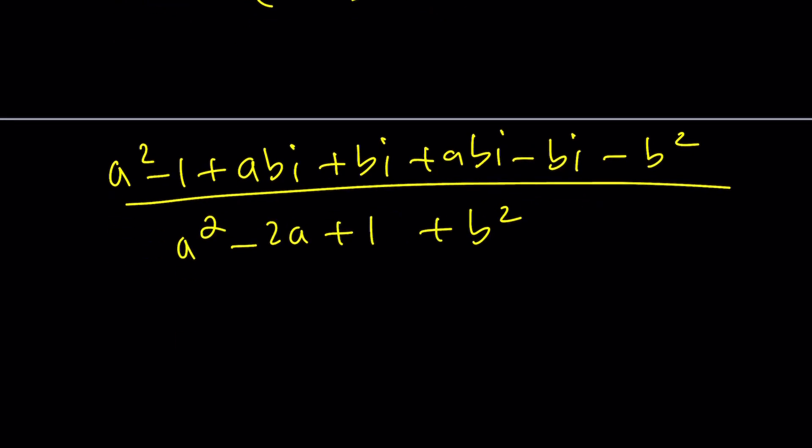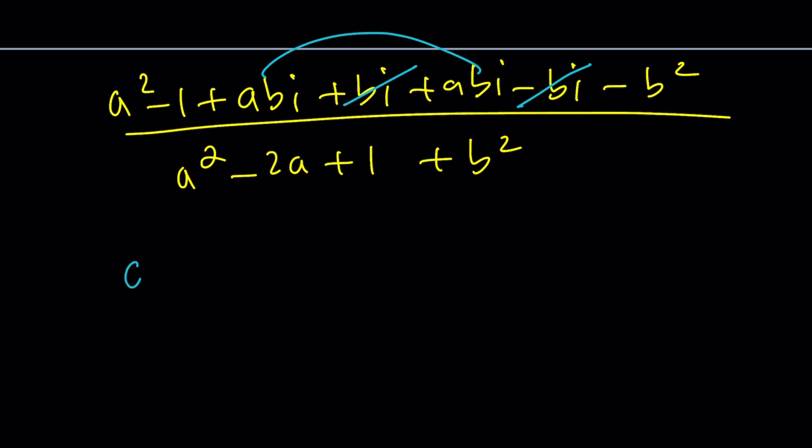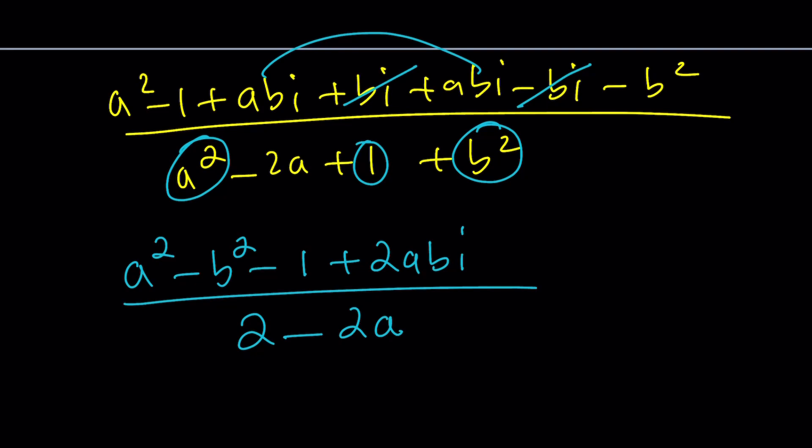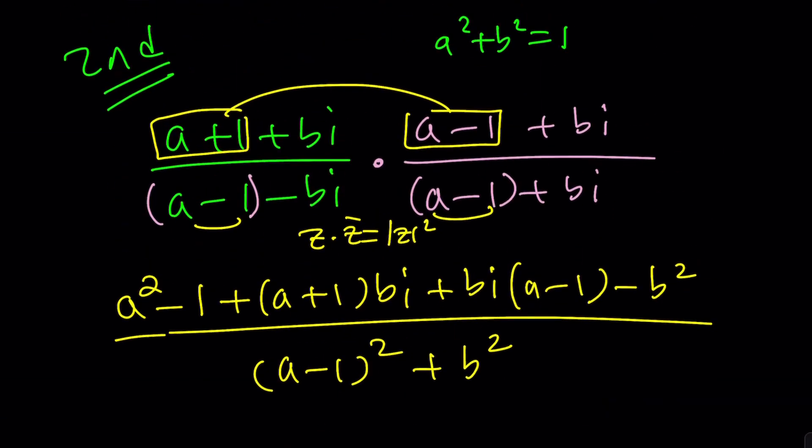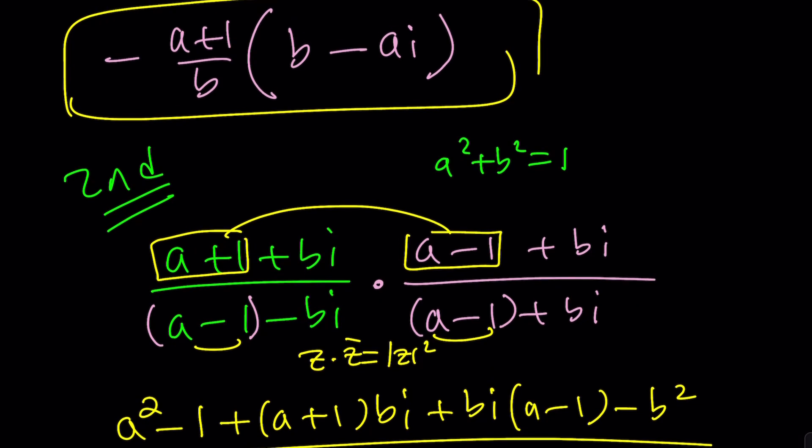Let's go ahead and plug it in. This is going to be with a negative sign, and inside we're going to get sine alpha, which is b, minus a i. So that should be the answer. And we can distribute and get something a little nicer. But let's leave it at that because we still have to do our second method. We have a plus 1 plus bi divided by a minus 1 minus bi, and we know that a squared plus b squared equals 1. Here's what I'm going to do: multiply by the conjugate.